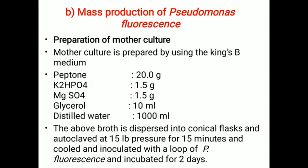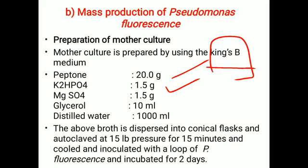Next, we discuss the mass production of Pseudomonas fluorescens — another biocontrol agent. A similar procedure is carried out as described for Trichoderma viridi; both procedures are the same, with the only difference being the media composition. The first step is preparation of mother culture, for which King's B medium is required. King's B medium composition: peptone 20 g, K₂HPO₄ 1.5 g, magnesium sulfate 1.5 g, glycerol 10 g, and distilled water 1000 ml.